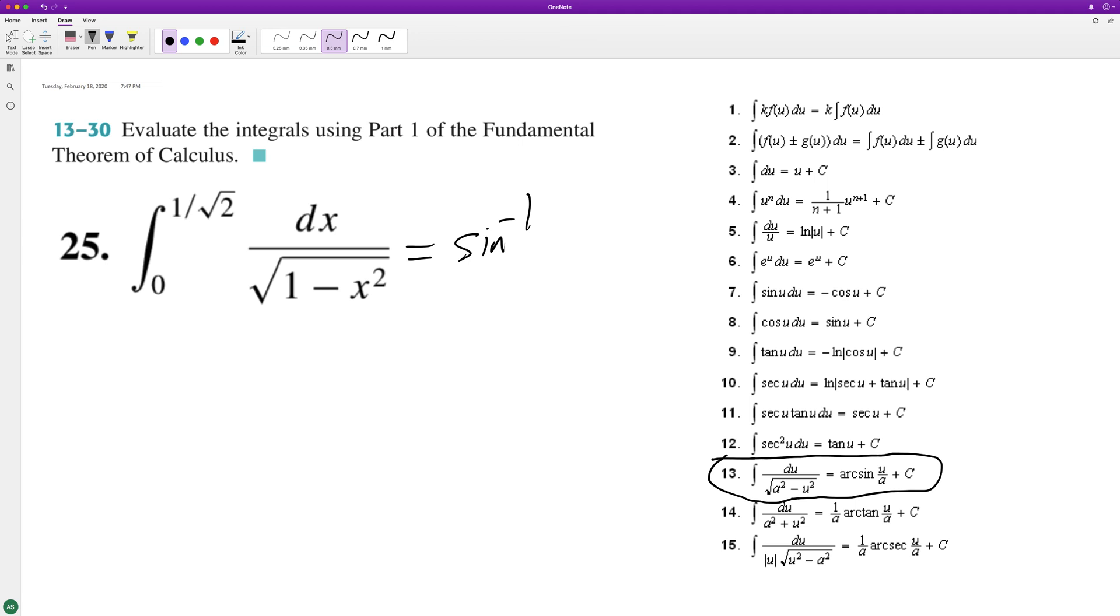of u over a, so x over 1, which is just x. We're going to evaluate this from 0 to 1 over square root of 2, or root 2 over 2—that's rationalizing the denominator.